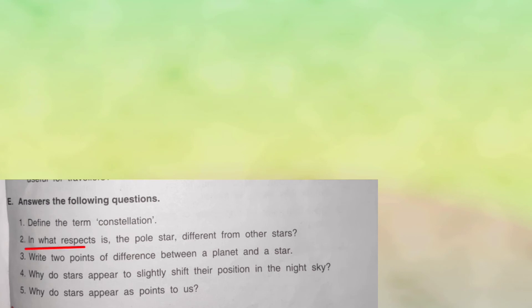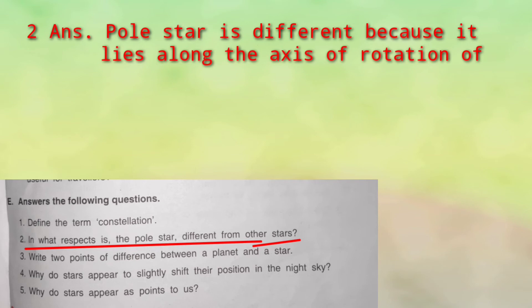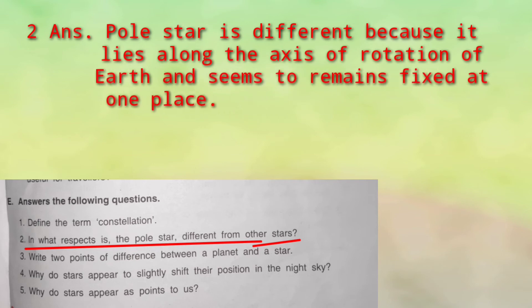In what respect is the Pole Star different from other stars? Pole Star doosre stars se different kyun hai? Because the Pole Star's position is fixed — it appears to remain fixed at one place. And it always points towards the north direction, which is why it is special.